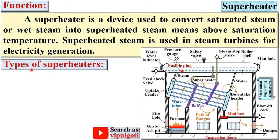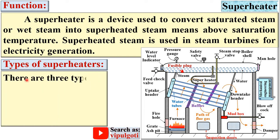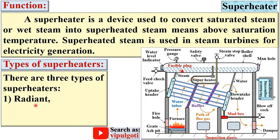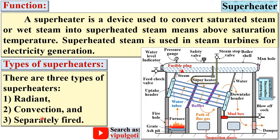Now, types of superheaters. There are three types of superheaters: radiant superheater, convection type superheater, and separately fired superheater.